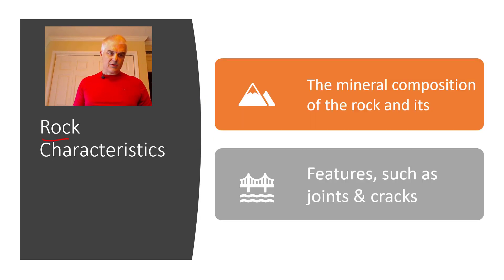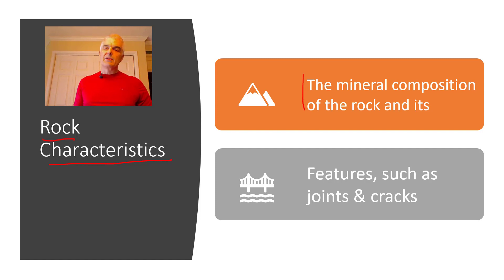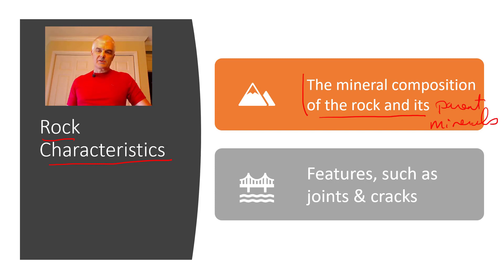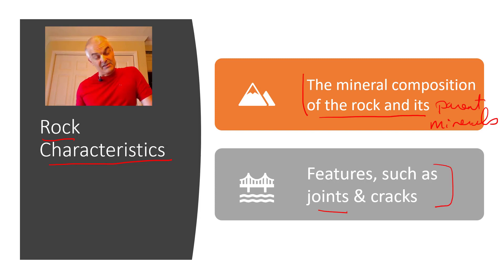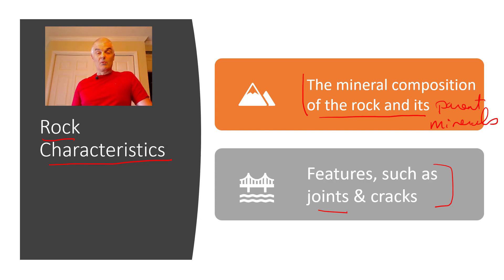So rock characteristics. If the rock is a type of rock that breaks down more readily chemically or whatever, then that makes a difference. So the mineral composition of the rock and its parent minerals makes a difference. And if you end up having cracks and joints, then that's going to cause it to weather more rapidly. Obviously, if it doesn't have these, then it will weather more slowly. Remember that everything weathers — it's just a matter of how fast, but some rocks will weather more rapidly than others.